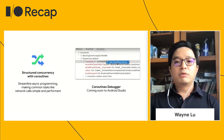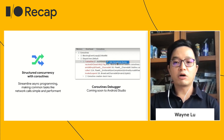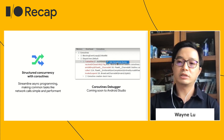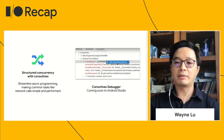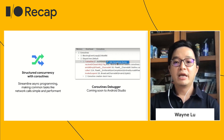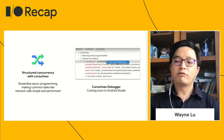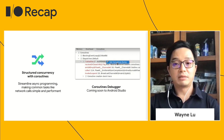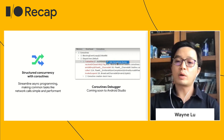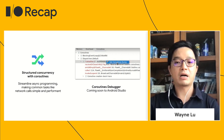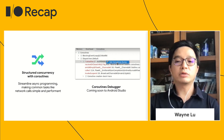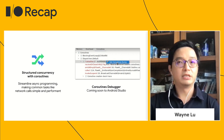Last year, we announced that Kotlin coroutines are the official recommended way to do asynchronous operations. Many of the libraries I mentioned incorporate coroutines in their APIs, including Flow for observable value streams. We are also working on integrating a coroutines debugger in Android Studio to help you visualize and troubleshoot issues.